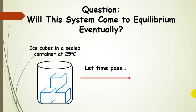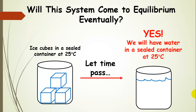Let's go back to our ice cubes in a sealed container. If we just let time pass, the sealed container will eventually hold water at 25 degrees C. Basically, this system would come to equilibrium, and macroscopic observables have stopped changing.